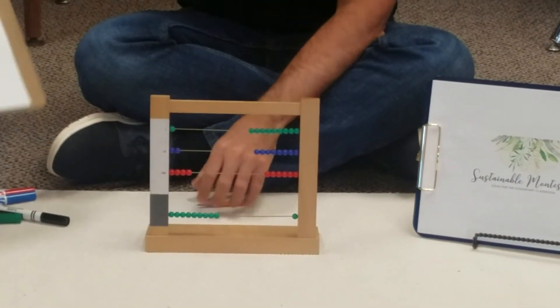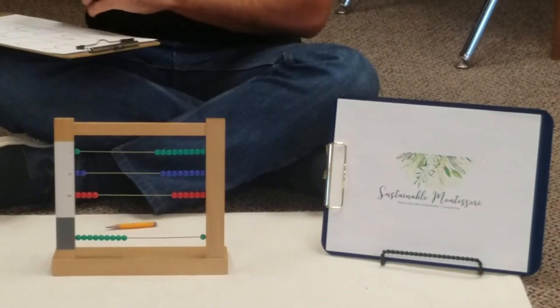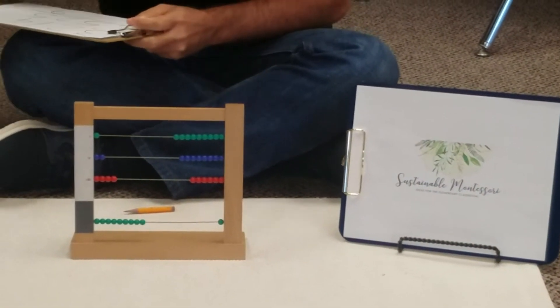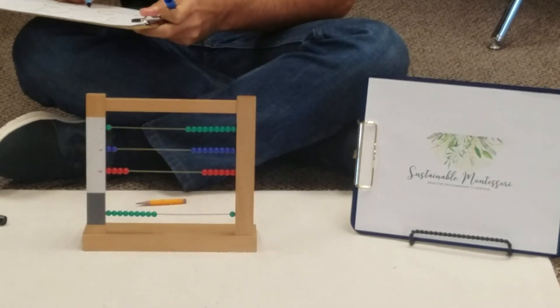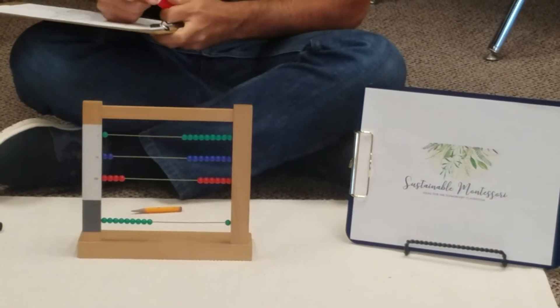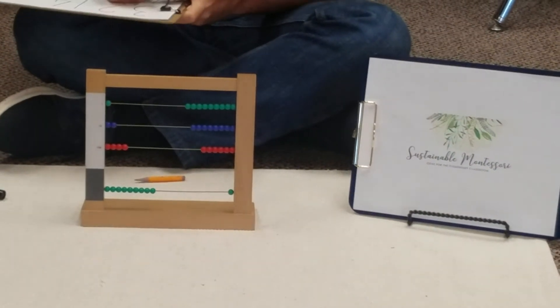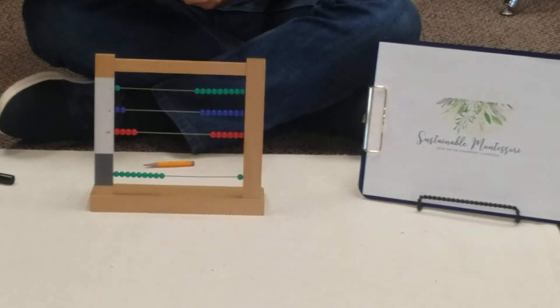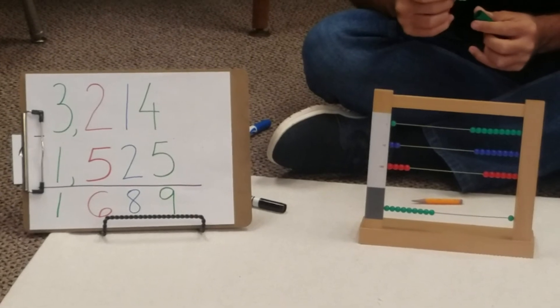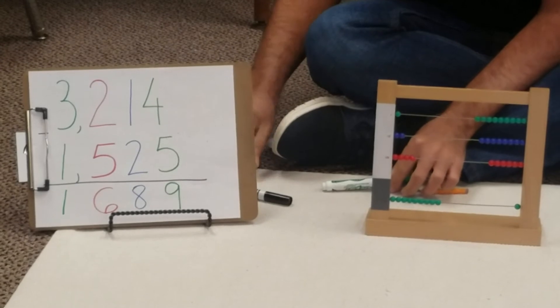So now we're going to record the answer. We have nine units, eight tens, six hundreds, and one thousand. So basically, we took away 3,214 minus 1,525. The answer would be 1,689.